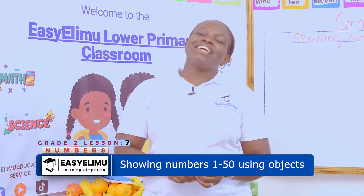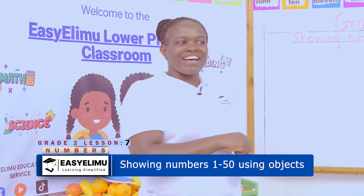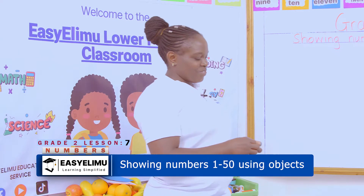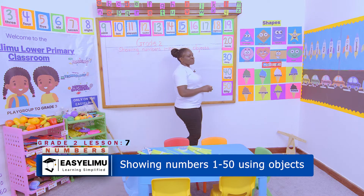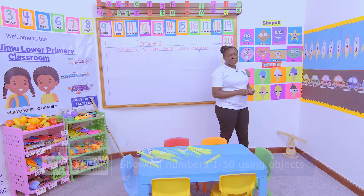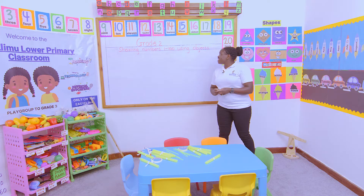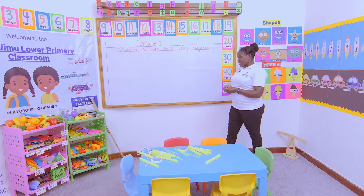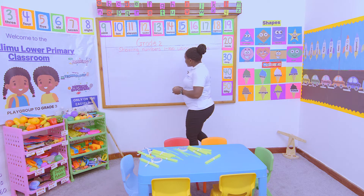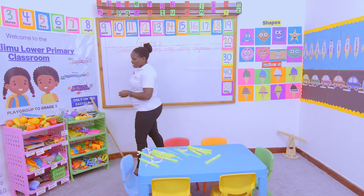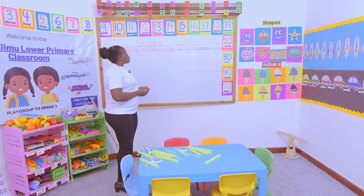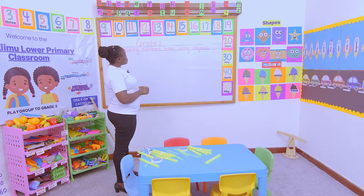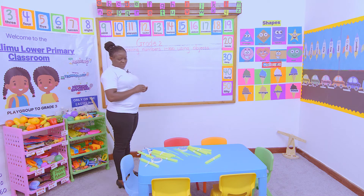Now we've been doing numbers using objects. We started with the first one, we went to number two, number three, we went to 20, 30, 40, 50, 60, 70, 80, 90, 100. Now we are here at 100. How do you show these numbers using objects?